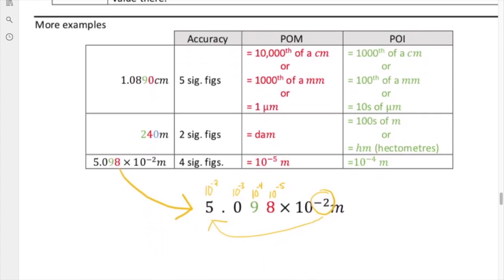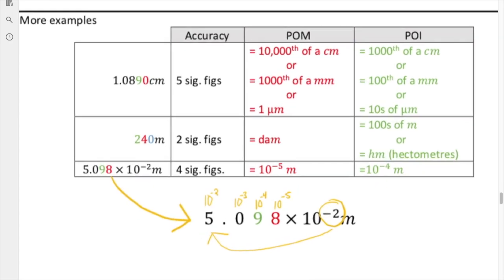Now let's look at a few examples where we determine the accuracy, precision of the measurement, and precision of the instrument for each measured quantity. As a reminder, we have to identify the position of the guess as well as the position of the precision of the instrument — the smallest scale. The guess is always the last significant digit, and the next-door neighbor to the left is always the location of the smallest scale on the instrument. In this case, everything is color-coded. The guess here is a zero, which is significant because you normally would not have a trailing zero there. So we count all the sig figs: one, two, three, four, five — a grand total of five sig figs.